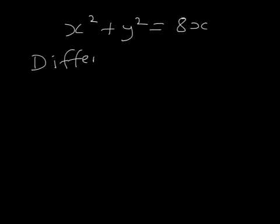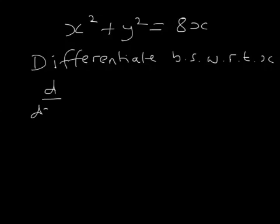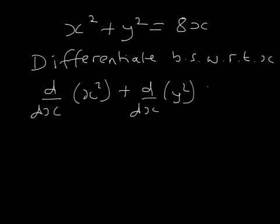What we're looking at in this video is equations like x squared plus y squared equals 8x and how to work out what dy by dx is. So let's differentiate both sides with respect to x. So that's d by dx of x squared plus d by dx of y squared equals d by dx of 8x.